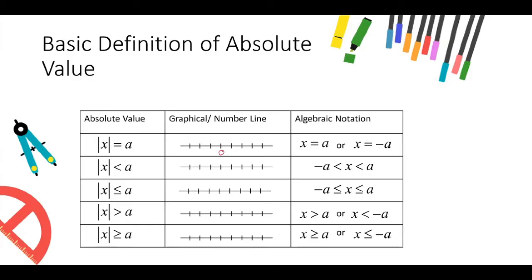Before that, let's recap the basic definitions of absolute value of x equals to a. The absolute value of x equals to a tells us the distance of x from 0 on a real number line is a units away to the left and a units away to the right, which gives us x equals to a or x equals to minus a.